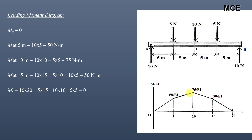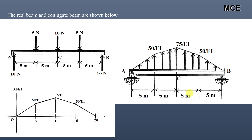Next, we draw the conjugate beam and load it with the M/EI diagram. This is the real beam and this is the conjugate beam. The conjugate support for a pin is also a pin, so support A remains a pin and support B remains a roller. Since the M/EI diagram is positive, we load the conjugate beam with the M/EI diagram pointing in the upward direction. If it were negative, the load would act downward.